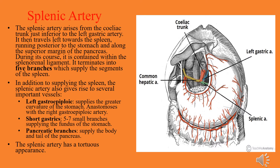One of the vessels is the left gastroepiploic artery, which supplies the greater curvature of the stomach and anastomoses with the right gastroepiploic artery. The short gastric arteries have 5 to 7 small branches supplying the fundus of the stomach. Pancreatic branches supply the body and tail of the pancreas. The splenic artery has a tortuous appearance with many twists and turns.